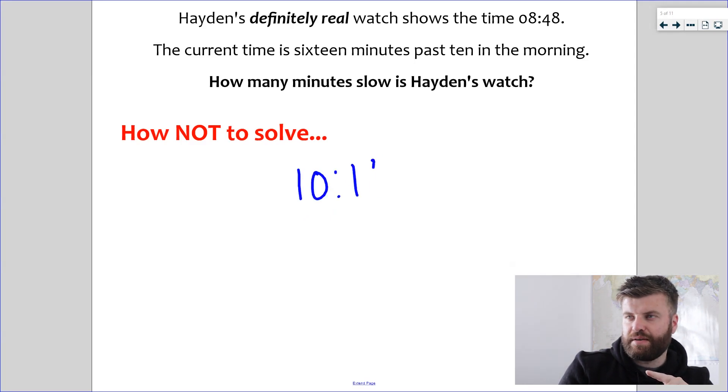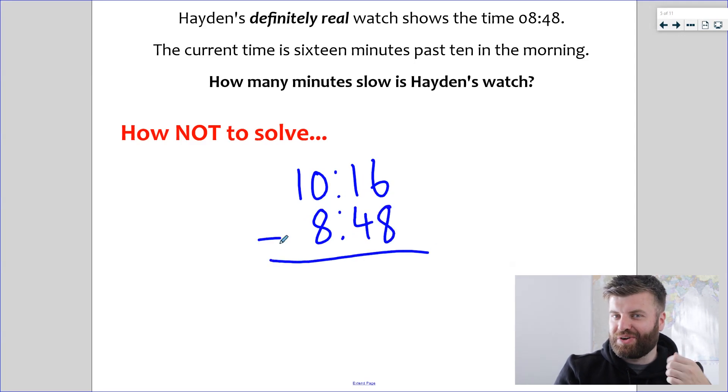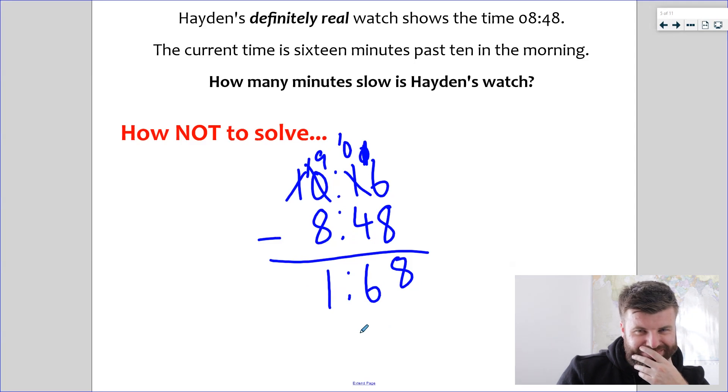So they'll do this, 10:16. And they'll know they have to take off 8:48 to find the difference because they used to that in their maths lessons, finding the difference, subtraction. And they will treat it like column method. We can get an answer, but it won't work. Let me show you. Exchange over. We're going to get 16. 16 take away 8 is 8. 0 take away 4 we can't do. So we're going to do lots of exchanging here. My goodness. This is already complicated. We've got 10. We're going to get 60. Okay. 9 take away 8 is 1. And we've got nothing left there. So 1 hour, 68 minutes.